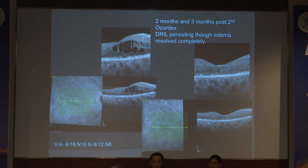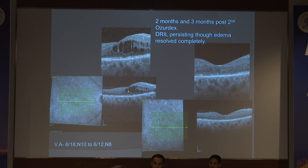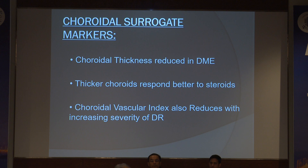A clinical case: this patient was shown at 2 months and 3 months post-Ozurdex. Post-injection, the patient had anatomical improvement, but there was definite disorganization of the retinal inner layer, there was recurrence, and the patient was re-injected. Although these patients have some improvement, it is not to a great extent.